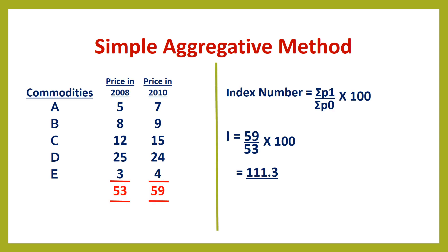For the application of the formula, five commodities are given: A, B, C, D, and E. The prices in 2008 and 2010 are given. When prices are given for two periods, we first find out which is the base year and which is the current year. Here, 2008 is taken as the base year and 2010 as the current year, since 2008 is the earlier period. The previous or back period is considered the base year and the more recent one is the current year, unless stated otherwise. Then we apply the formula: index number equals Sigma P1 divided by Sigma P0 into 100.